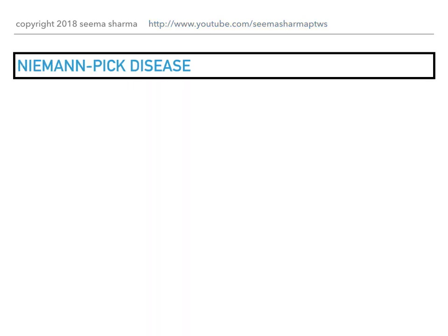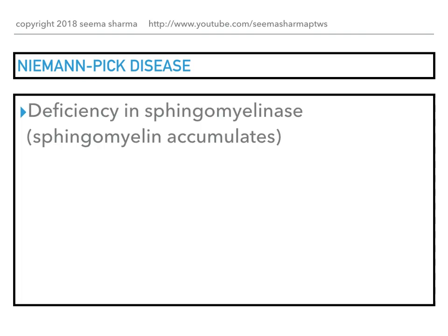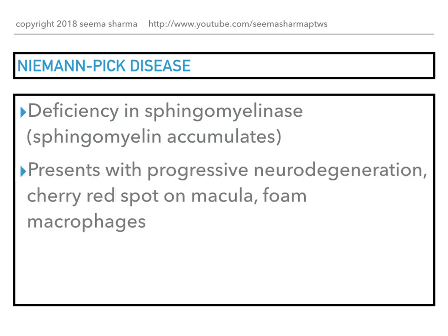Niemann-Pick's disease is caused by deficiency in sphingomyelinase, so sphingomyelin accumulates. The clinical presentation is progressive neurodegeneration, cherry red spot on the macula, and foam macrophages.